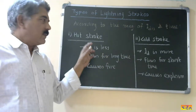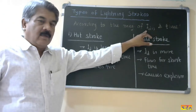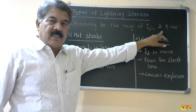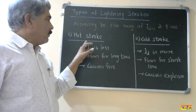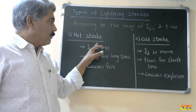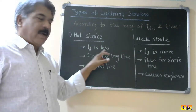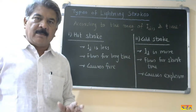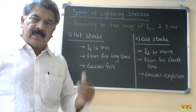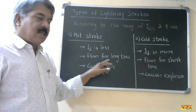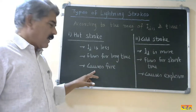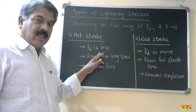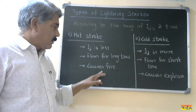The next classification is according to the magnitude of the lightning discharge current and the time for which this discharge current flows. The first classification is hot strokes. Hot strokes are characterized by a low magnitude of discharge current. Please note that low magnitude here does not mean milliamperes or amperes — it is in kiloamperes, but relatively less current. This current flows for a long time, and its characteristic effect is that it causes fire when it strikes the object.